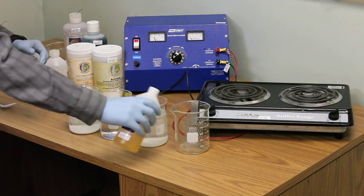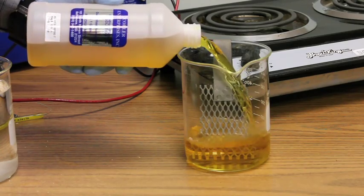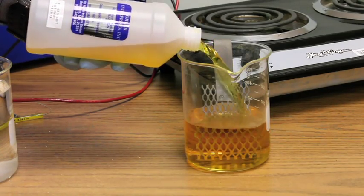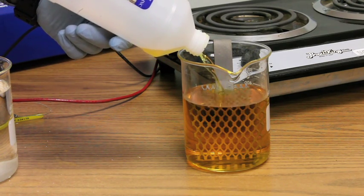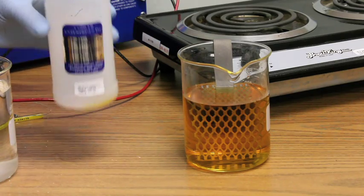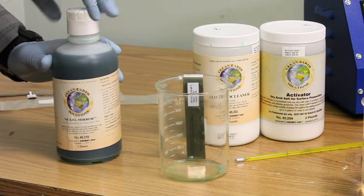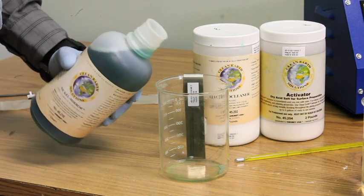Pour the rhodium solution into a beaker with a platinized titanium anode. The only additional bath needed is a beaker filled with nickel and a nickel anode.